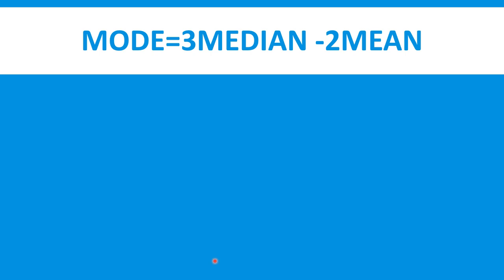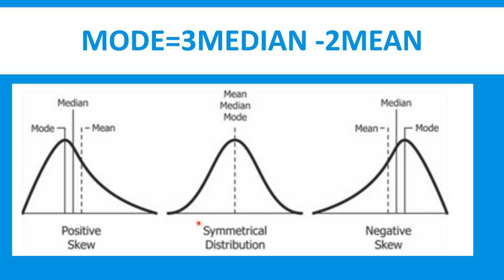Mode is equal to 3 median minus 2 mean. یہ relationship practices سے observe کیا گیا ہے کہ ان تین measures کے درمیان یہ exist کرتا ہے۔ یہ آپ کے سامنے 3 طرح کی shapes آئی ہیں: پہلی shape میں mean، median اور mode برابر ہیں — یہ symmetrical distribution ہے۔